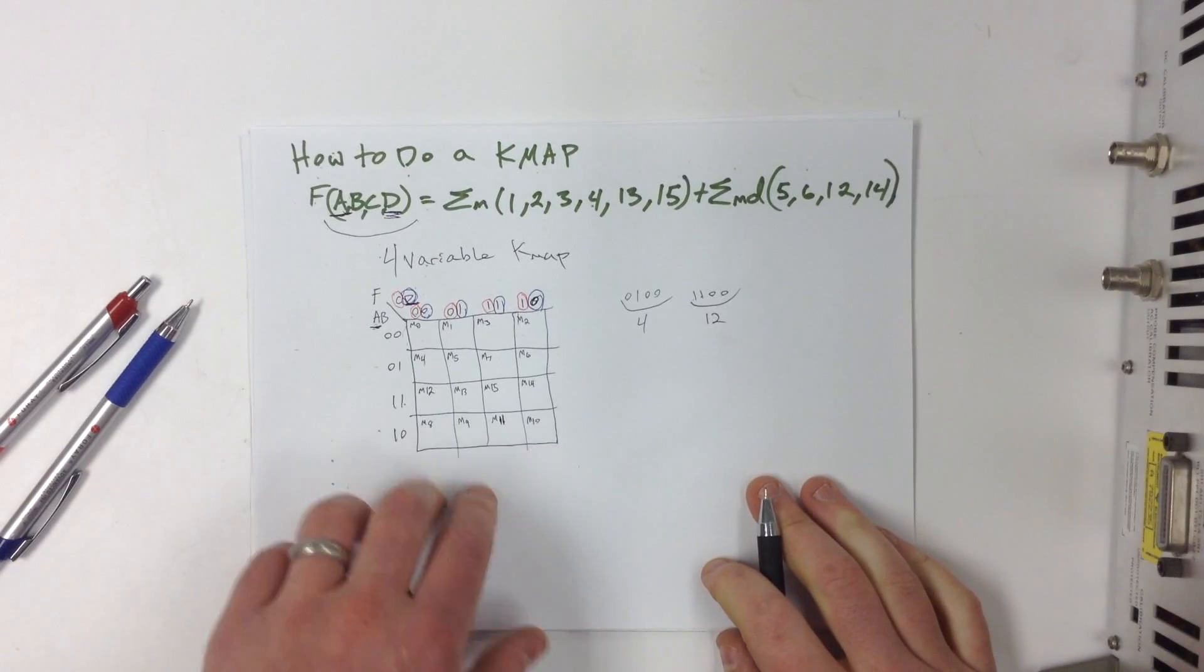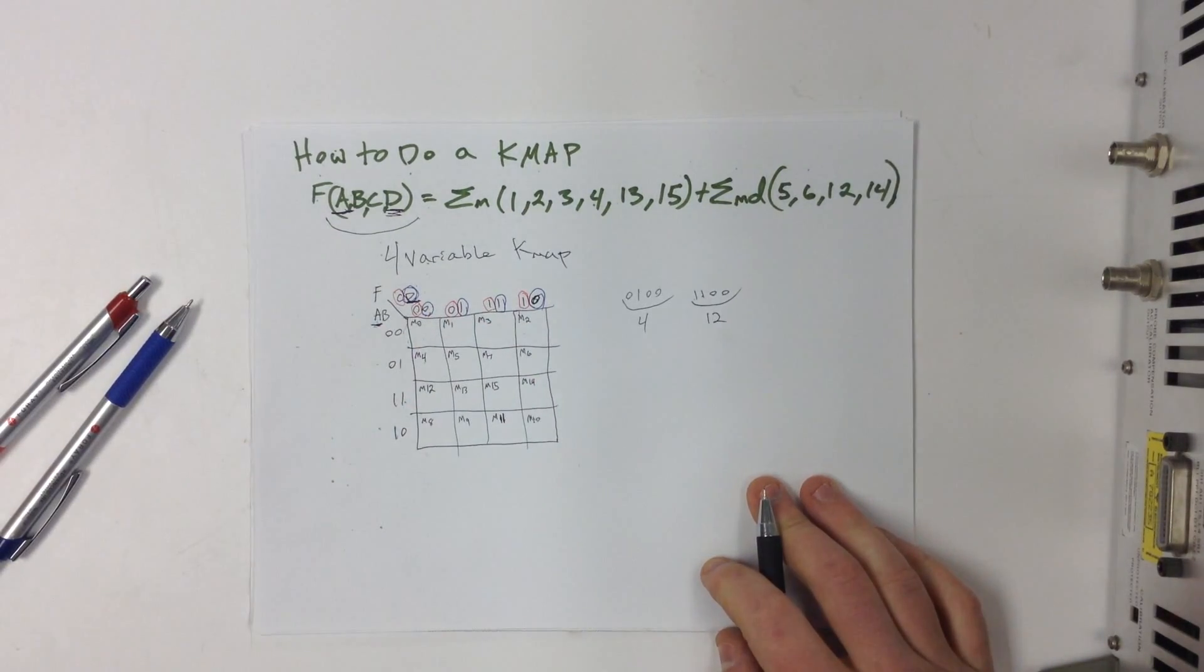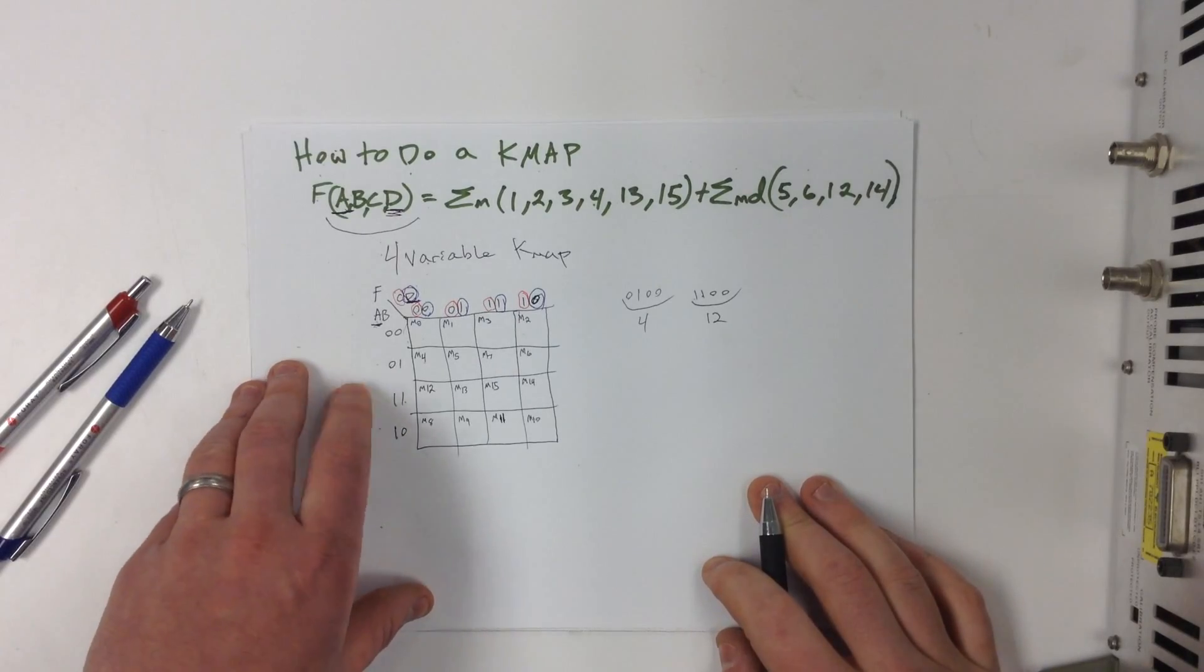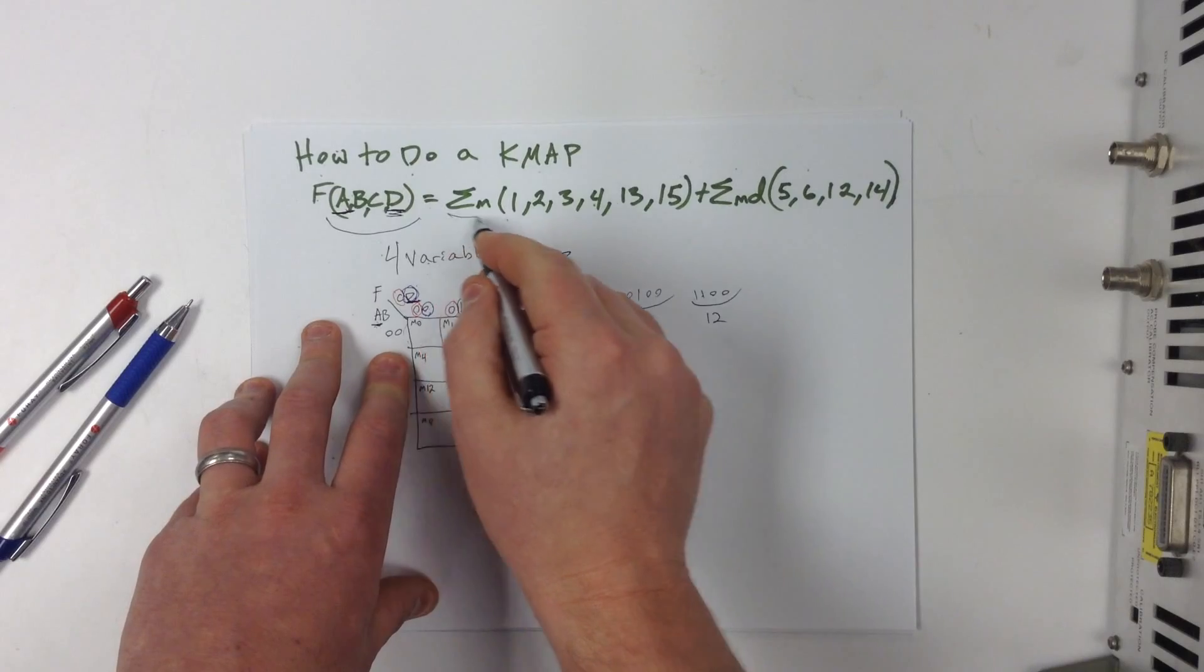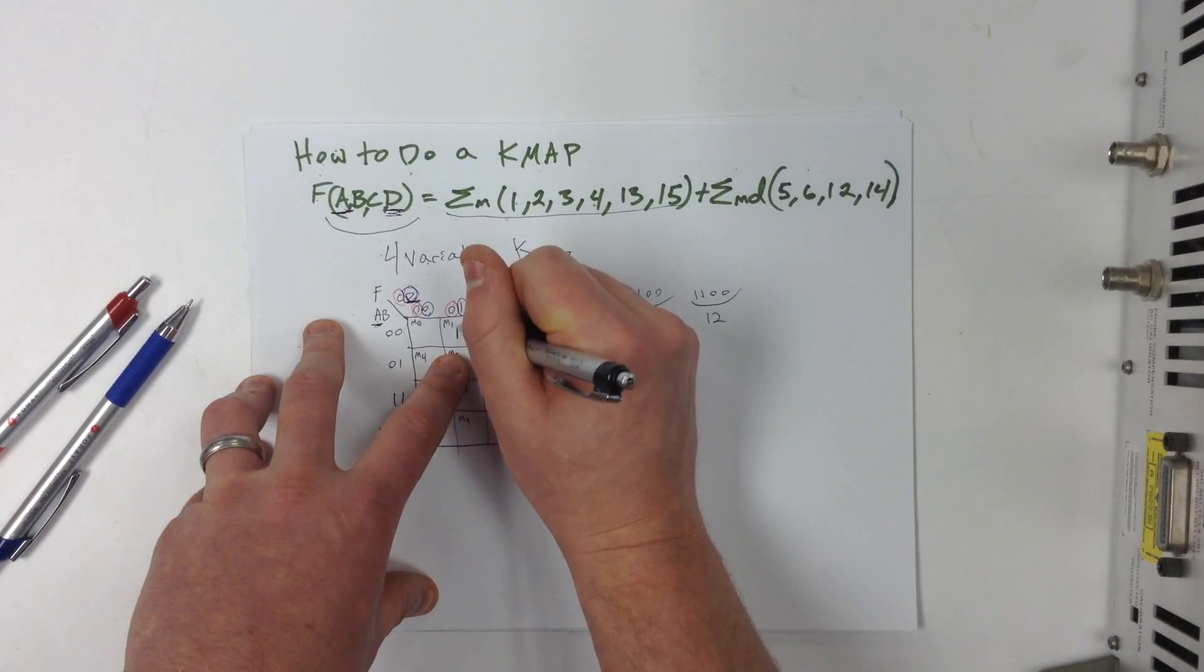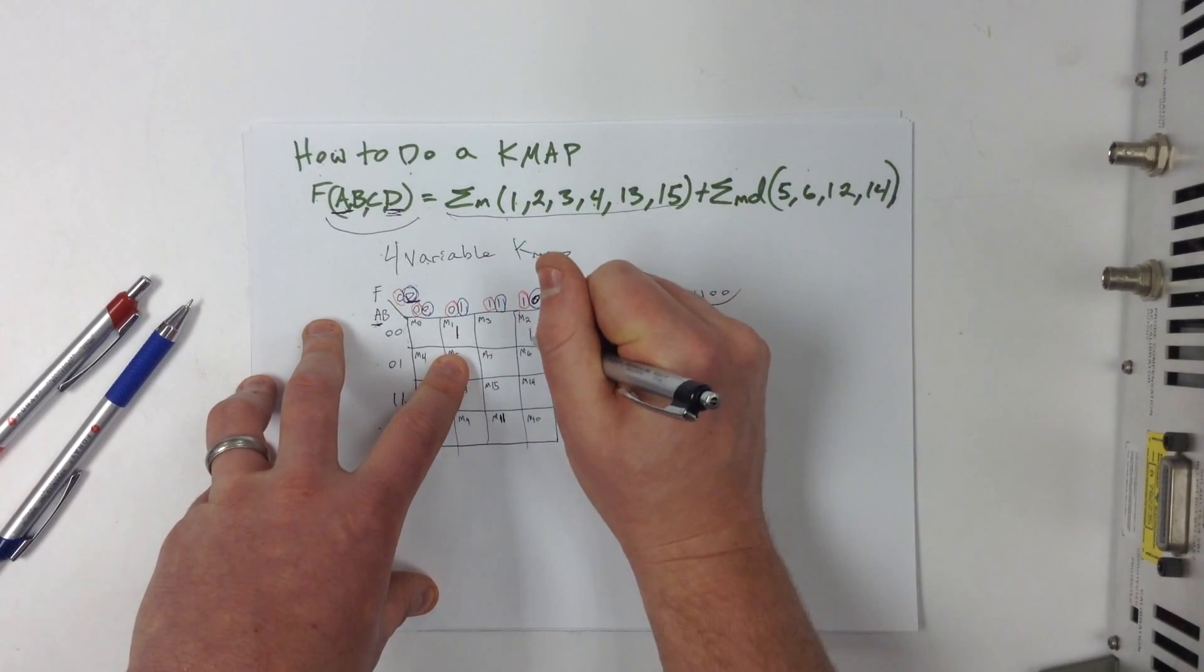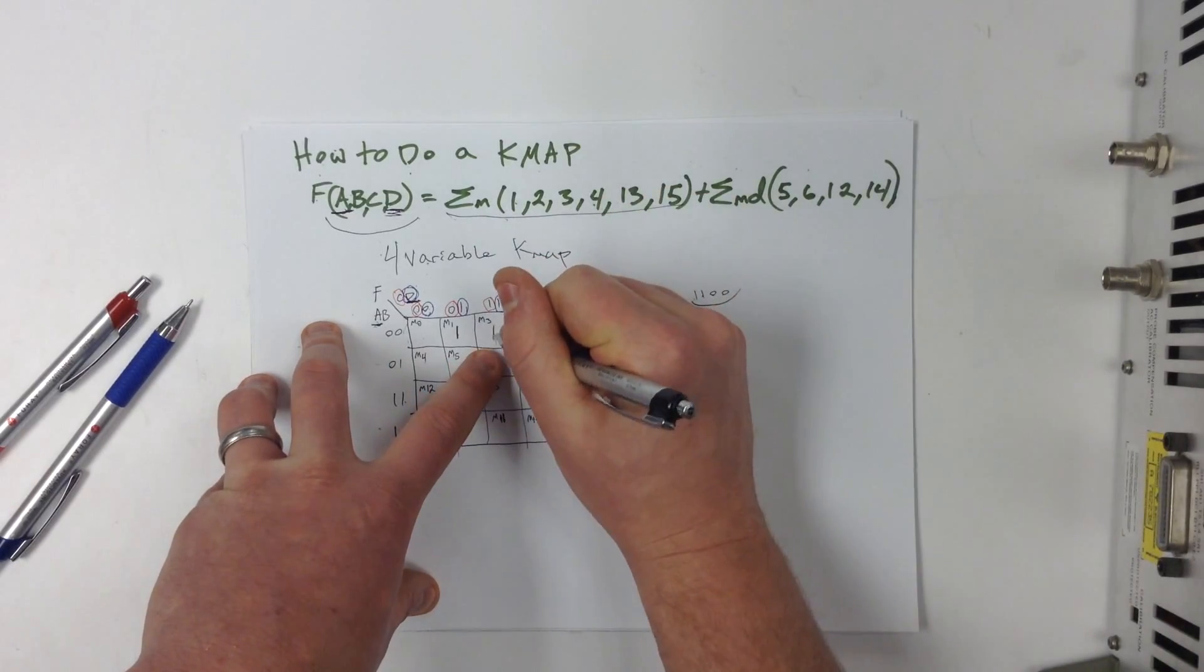Now, these will be the same for max terms, the same numbers for max terms. It's just you would be following 0's at that point instead of minterms, in which case we're following 1's. So this function right here tells us that the sum of minterms is these numbers. So we have minterm 1, we're just going to put a 1 in there. We have minterm 2, we're going to put a 1 in minterm 2.